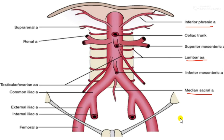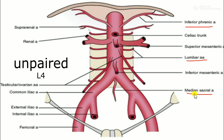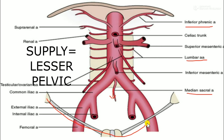The median sacral artery is unpaired and arises from the aortic bifurcation at the level of L4, descending along the pelvic surface of the sacrum to the lesser pelvis.